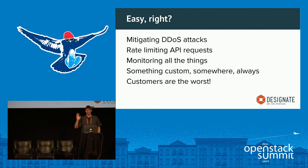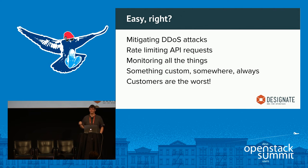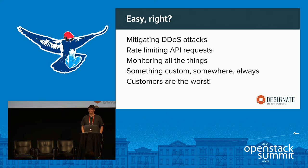A few things to consider when running DNS in your own cloud: you're going to have to mitigate some sort of DDoS at some point — it'll probably be a customer with a runaway script. You might want to rate-limit API requests so customers don't go nuts. You're going to monitor all the things. At some point you're going to have to write something custom — every cloud has something weird or out of band — and luckily Designate will let you do that.